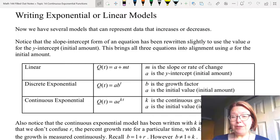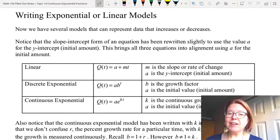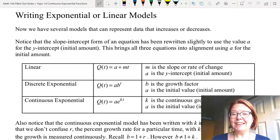I've written all three of these models in a table here. I want you to notice that I am rewriting the slope-intercept form of an equation to use the value a for the y-intercept, because in the exponential equations a always represents the initial amount, and the y-intercept always represents the initial amount.